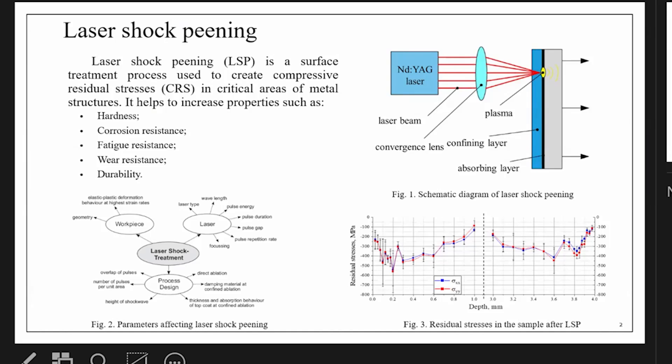During peening, hardening is achieved by the interaction of laser radiation with the substance. The scheme of this method you can see on screen in Figure 1. To protect the surface of the material from direct exposure to laser radiation, a special coating was used.